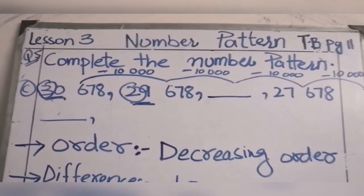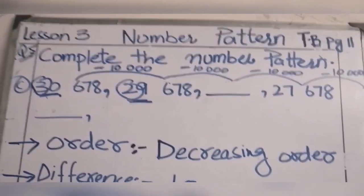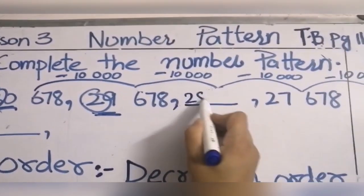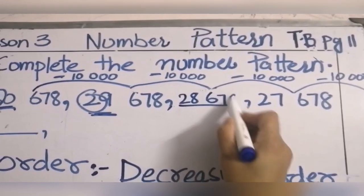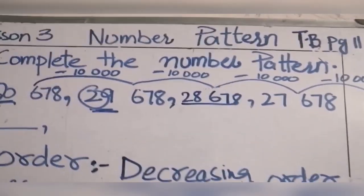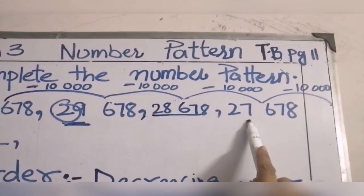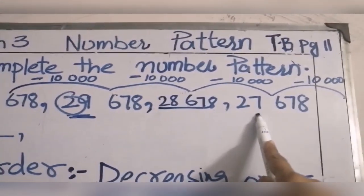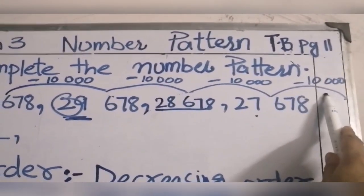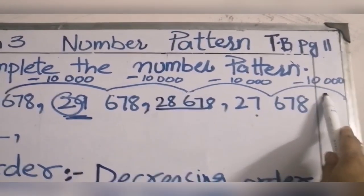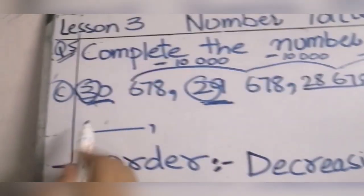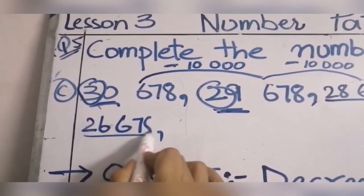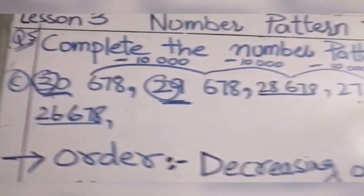Continuing the sequence, when we subtract 10,000 it becomes 28,678, then 27,678, then 26,678, and so on subtracting 10,000 from each number.